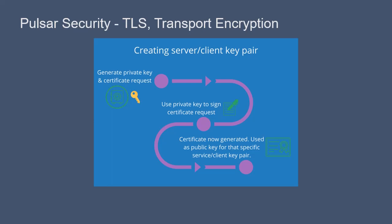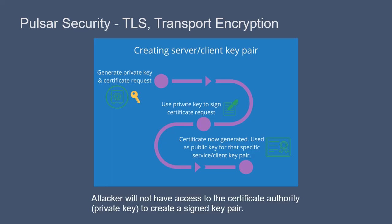Here is how the TLS encryption plays out. The clients use the trust certificate, or the public key, to verify that the server has a key pair that is signed by the certificate authority. An attacker — specifically a man-in-the-middle attacker — will not have access to the certificate authority to create a signed key pair.